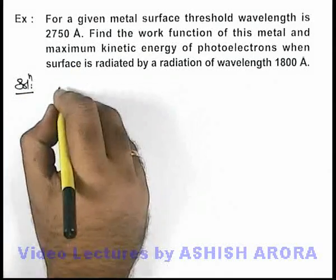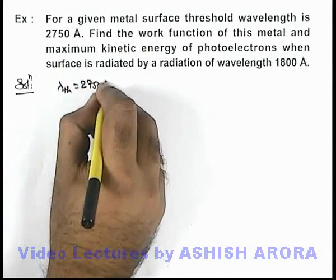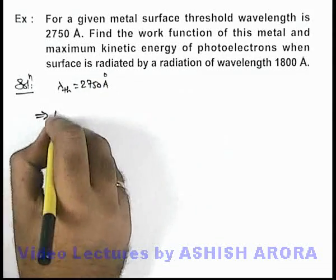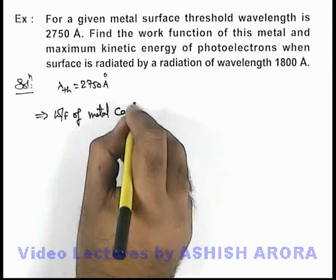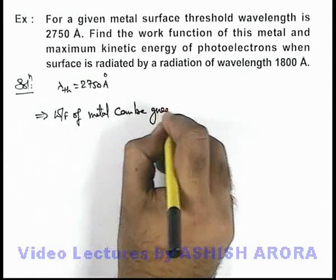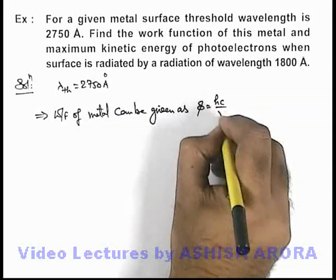Now in this situation, as we are given that threshold wavelength is 2750 angstrom, this implies work function of metal can be given as phi equals h c by lambda threshold.